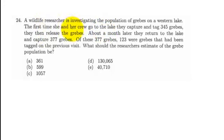The first time she and her crew go out, they capture and tag 345 grebes, then release them. About a month later, they return to the lake and capture 377 grebes. Of those 377, 123 were grebes that had been tagged on the previous visit. What should the researchers estimate the population at?